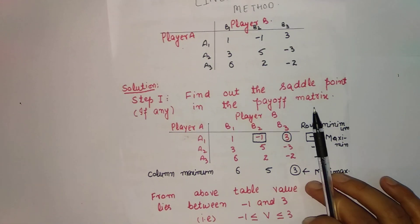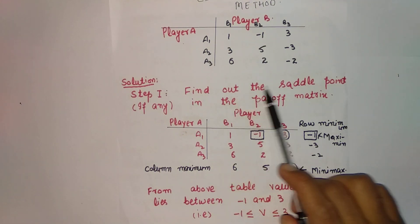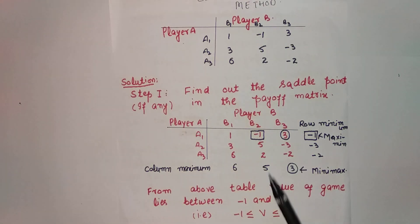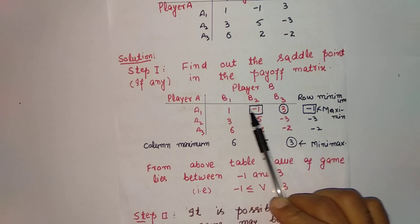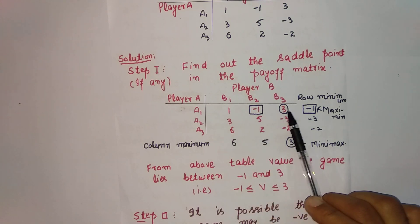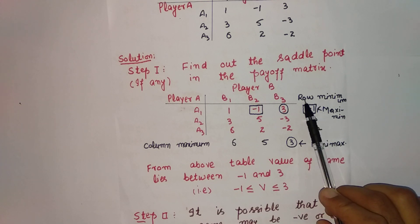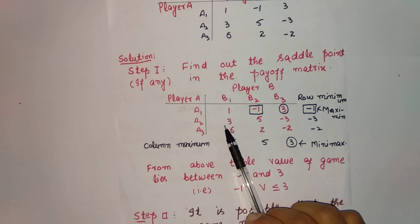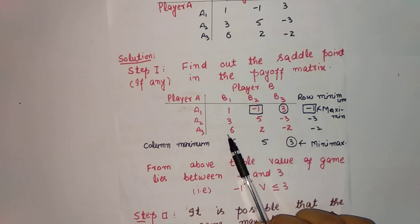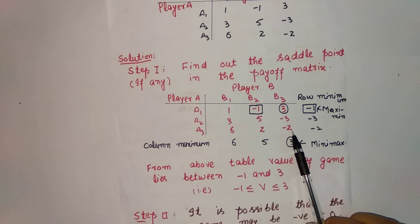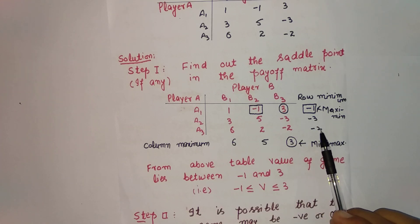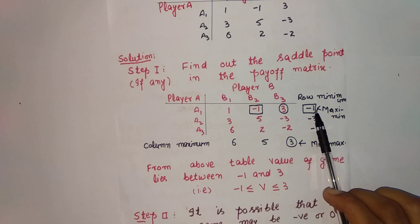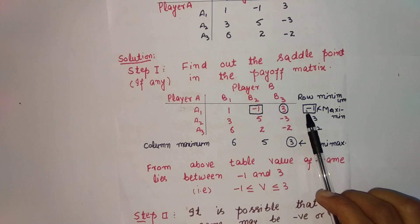Step number 1: find out the saddle point, if any, in the payoff matrix. We start with the first row. The minimum element in the first row is −1, so I have written row minimum as −1. The minimum element in the second row is −3, and the minimum element in the third row is −2. Then we find the maximum element among these three — the maximum one is −1. So I encircle this with a triangle.